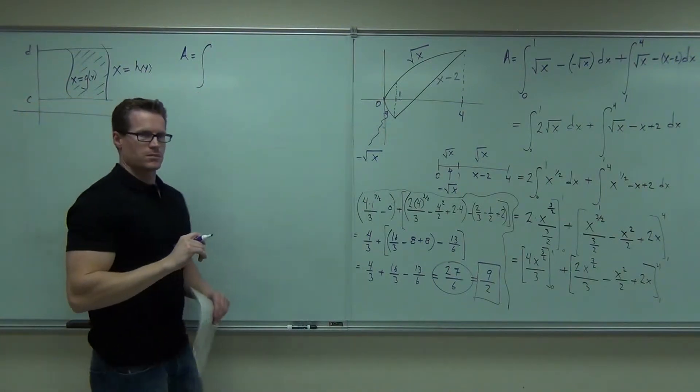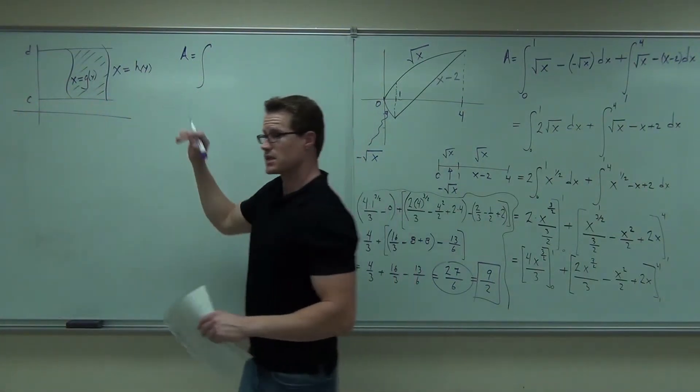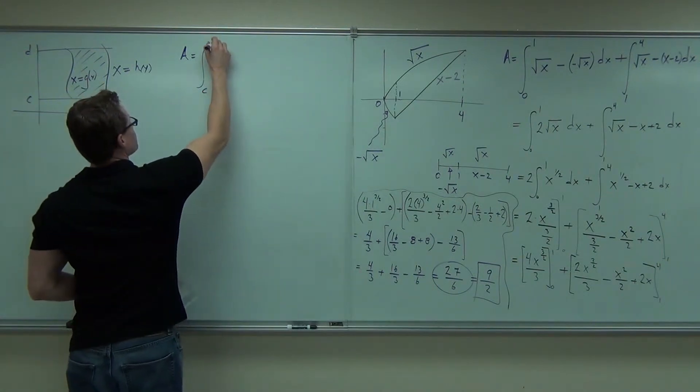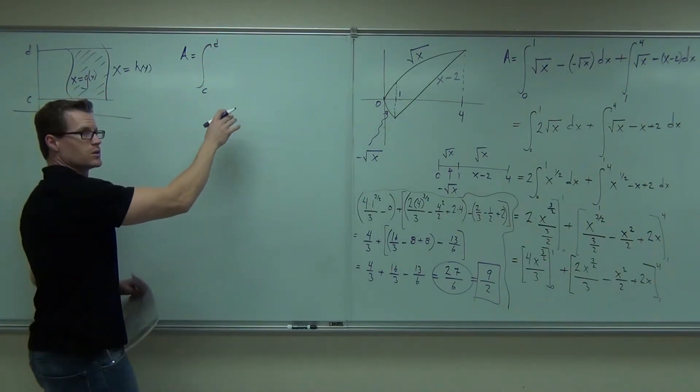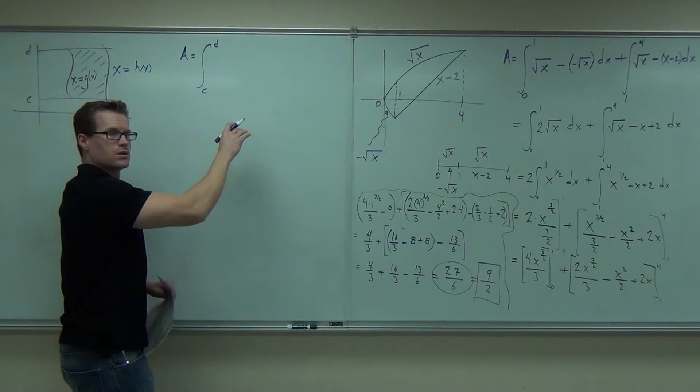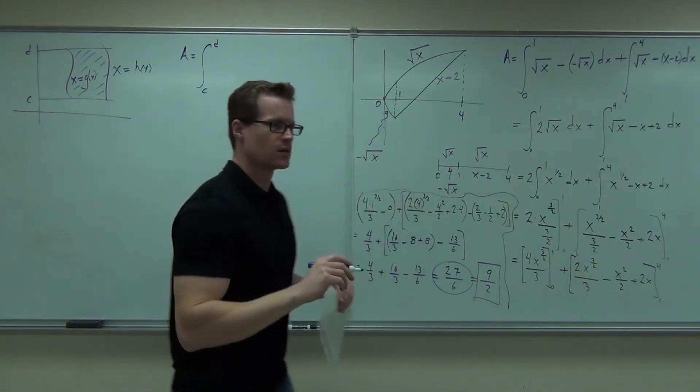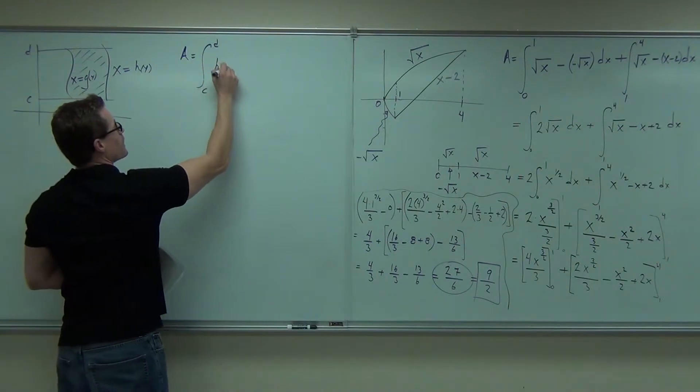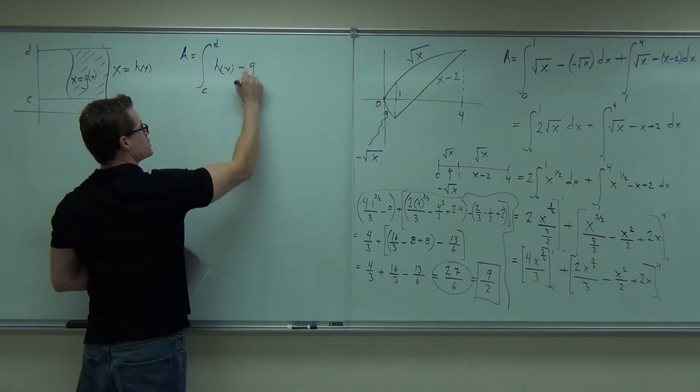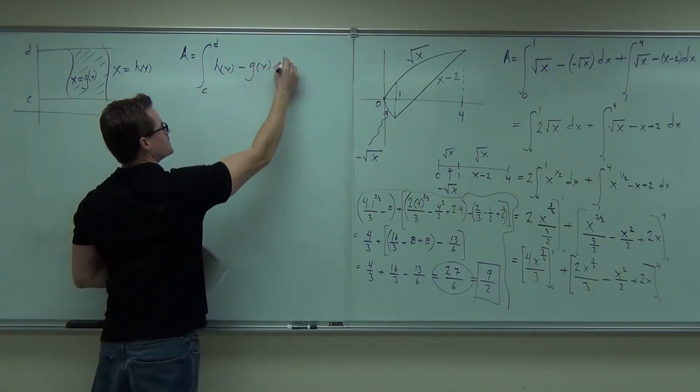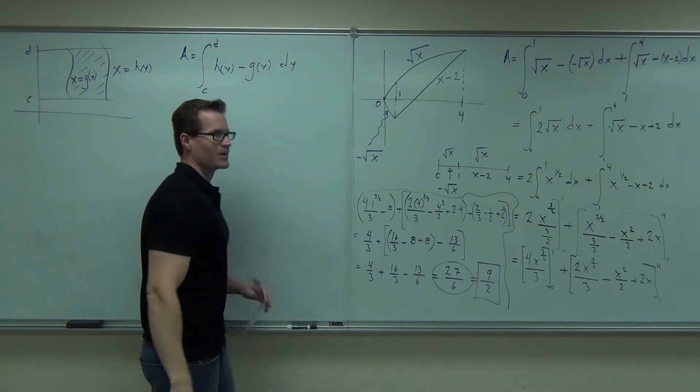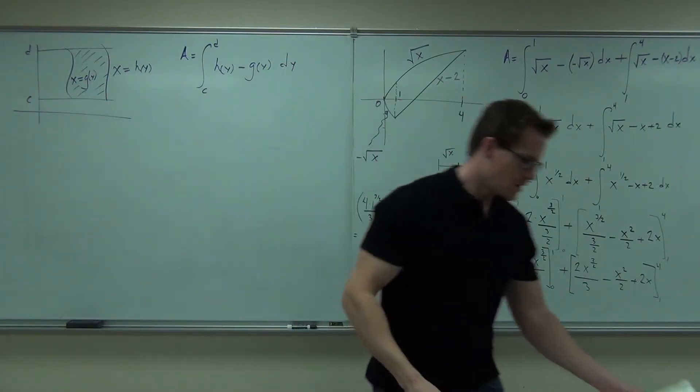Our area in this case would be, where would it start on the y-axis? Where does it start for here? c. Where's n? Which one's going to come first? Which one's on the top or on right? x equals h of y. So, it would be h of y minus g of y d what? Not even y. In terms of y now.